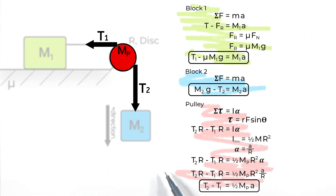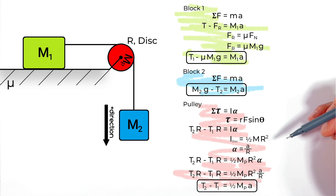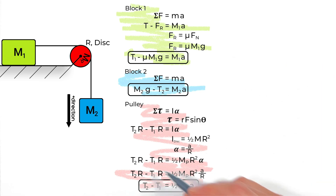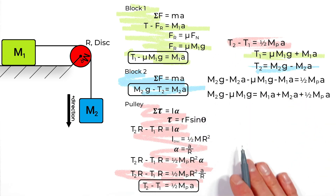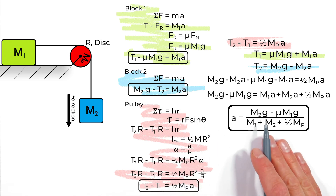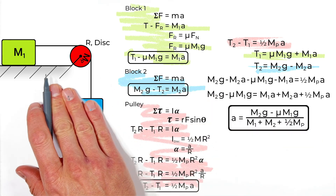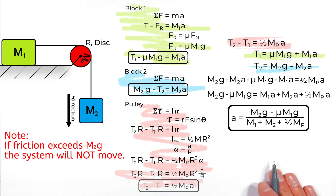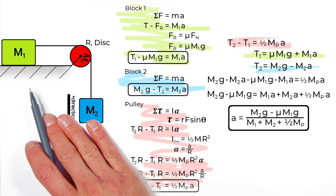After the radius cancels, we have three neat equations with three unknowns: T1, T2, and A. Rearranging the first two equations for T1 and T2 and substituting into the pulley equation yields the final result: A equals (M2·G minus mu·M1·G) divided by (M1 plus M2 plus one-half the pulley mass). The numerator is the net driving force minus friction, and the denominator is the effective total mass of the system. This is how you solve an Atwood machine with both pulley mass and surface friction.